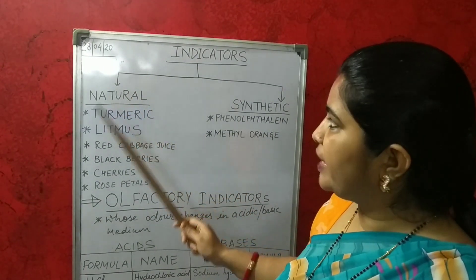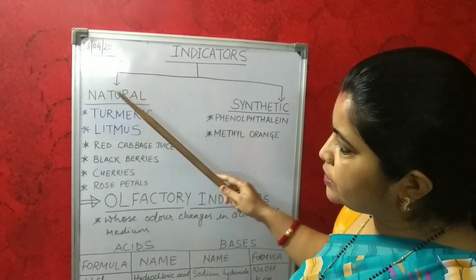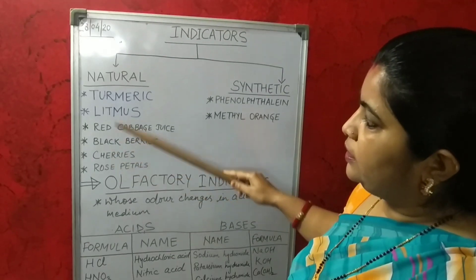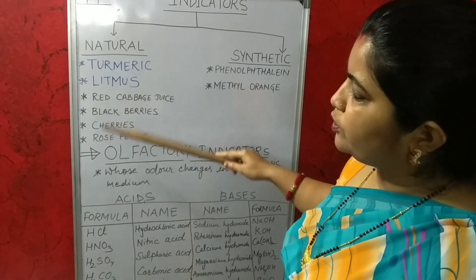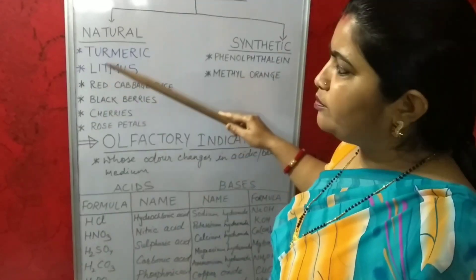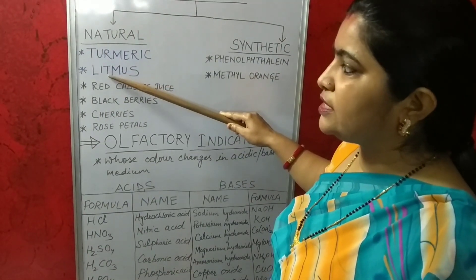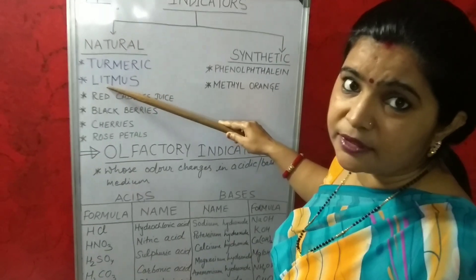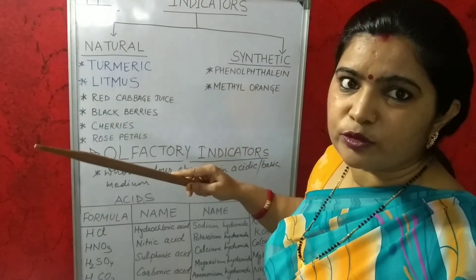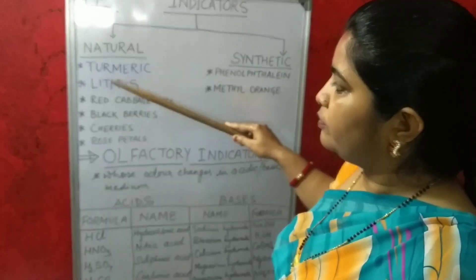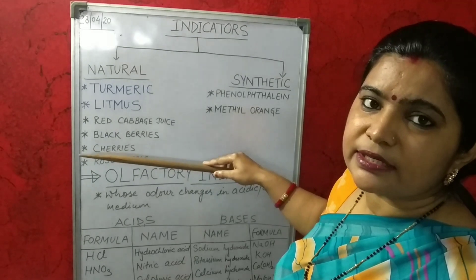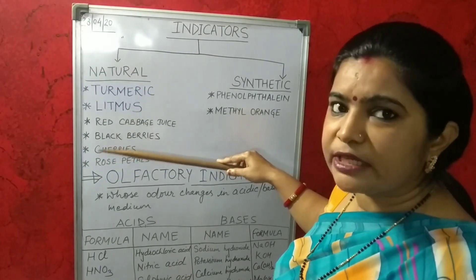First we will discuss about natural indicators. You can see here some of the names of natural indicators are written, and you must be knowing about each and every one. In my previous video I had discussed about litmus paper — if you have not seen it, you can go back to that video and watch it. These all are natural indicators which are derived from natural sources.